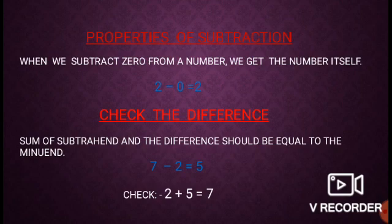Check the difference. Sum of subtrahend and the difference should be equal to the minuend. Take an example: 7 minus 2 equals 5. We have to check whether our answer is right or wrong. We will add subtrahend and the difference. If it is equal to the minuend, it means our answer is correct. So, 2 plus 5 equals 7, and 7 is the minuend. Our answer is correct.